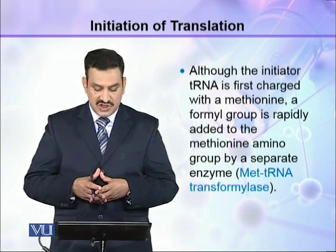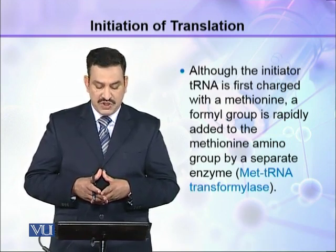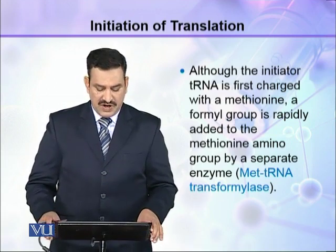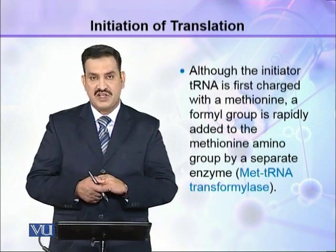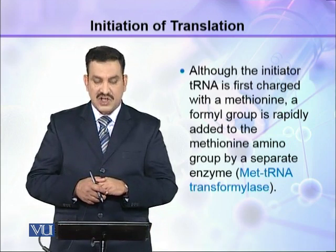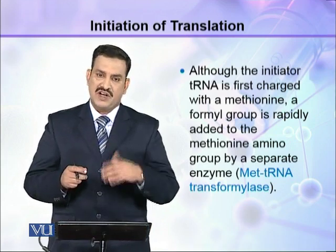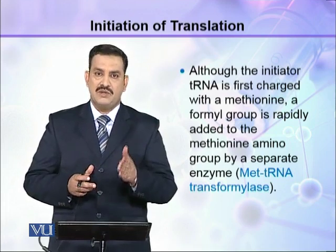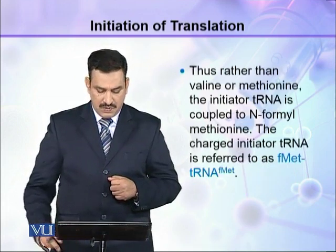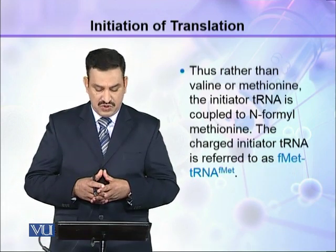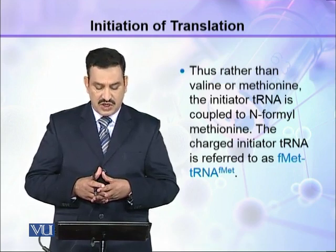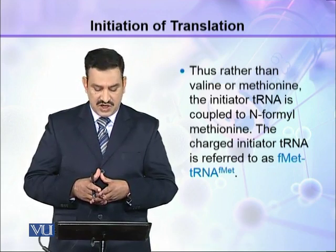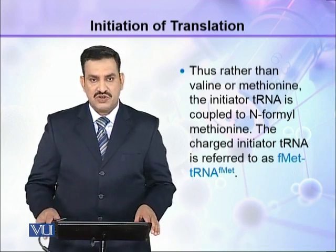Although the initiator tRNA is first charged with methionine, a formyl group is rapidly added to the methionine amino group by a separate enzyme called Met-tRNA transformylase. The addition of the formyl group transforms the methionine into formyl-methionine. Thus, rather than valine or methionine, the initiator tRNA is coupled to N-formyl-methionine. The charged initiator tRNA is referred to as fMet-tRNA.